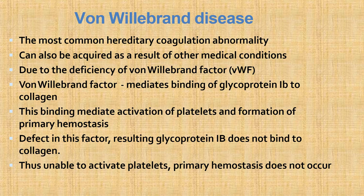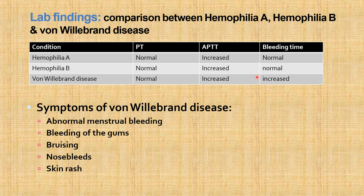Von Willebrand disease is the most common hereditary coagulation abnormality; it can also be acquired. It is due to deficiency of von Willebrand factor, which mediates binding of glycoprotein 1b to collagen (the first step in platelet adhesion), mediates platelet activation, and formation of the platelet plug. Defect in this factor means GP1b cannot bind to collagen, so platelets cannot activate and primary platelet plug formation does not occur.